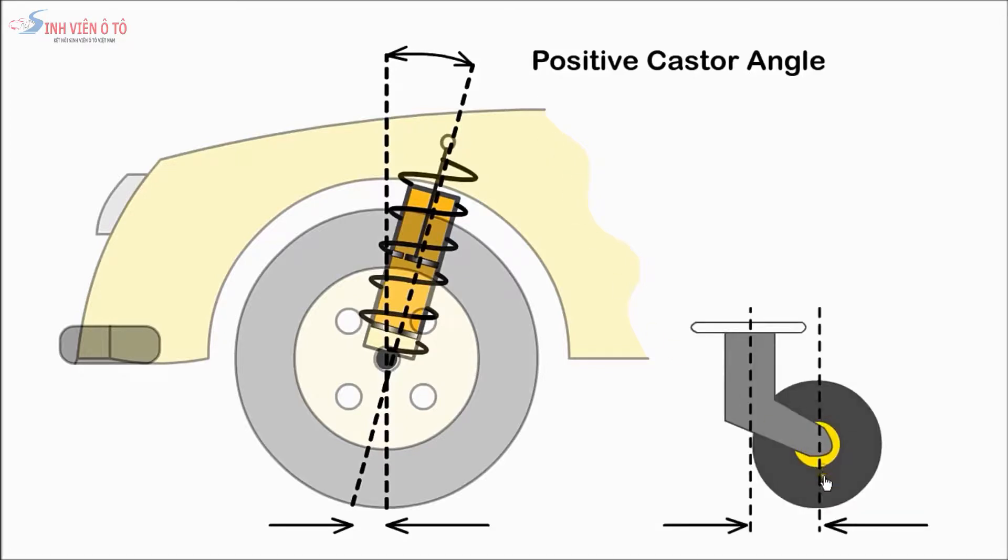With a tea trolley, the wheels always follow the direction in which the trolley is pushed. Most cars have positive caster.